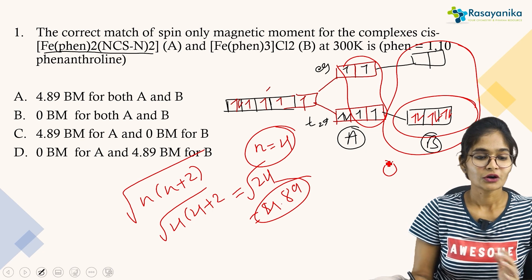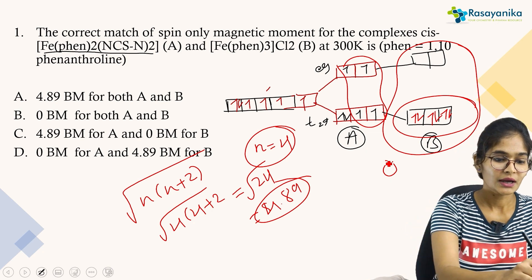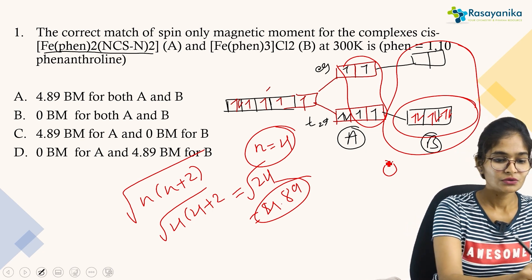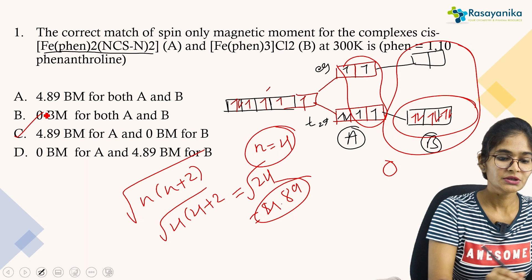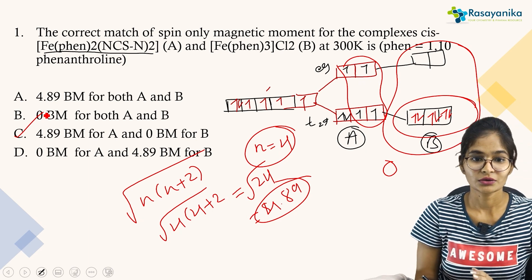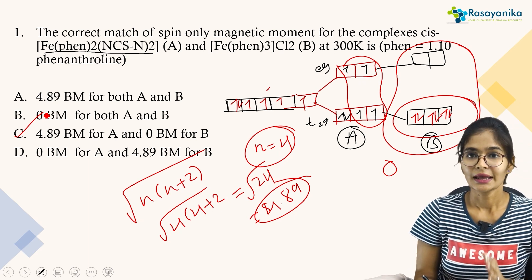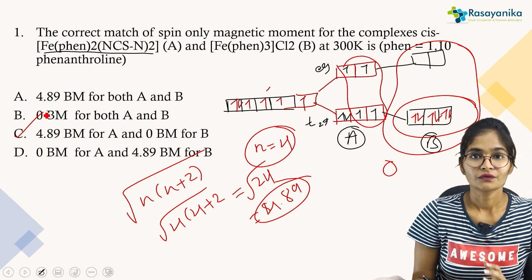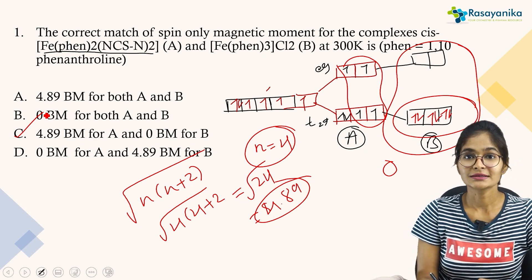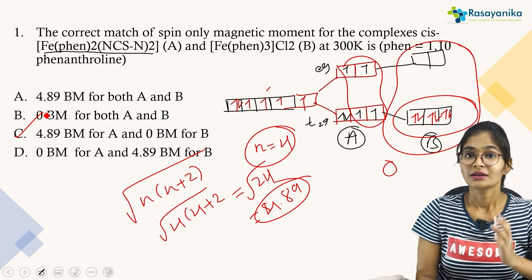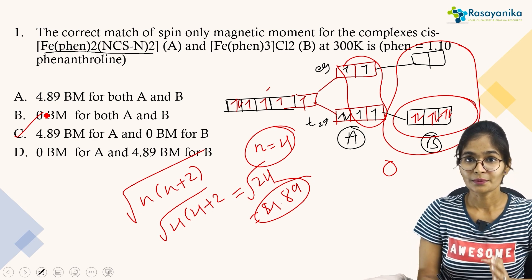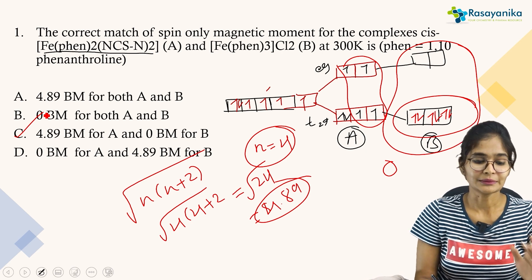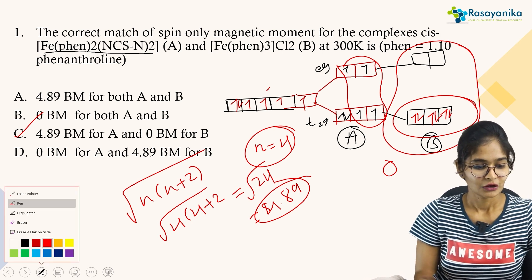Looking at the options A, B, C, D — option C is correct: 4.89 Bohr magneton for complex A and 0 Bohr magneton for complex B. This is the answer, and the approach of checking high spin vs low spin nature first is very important.